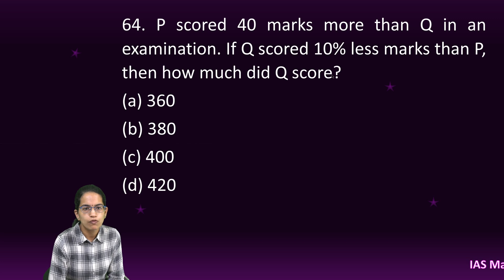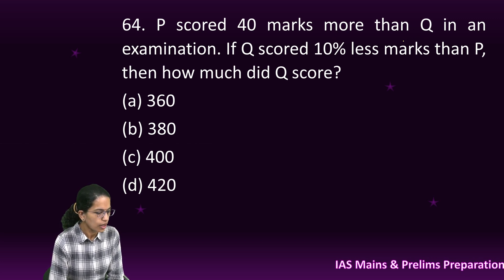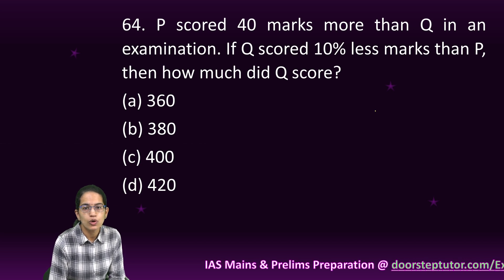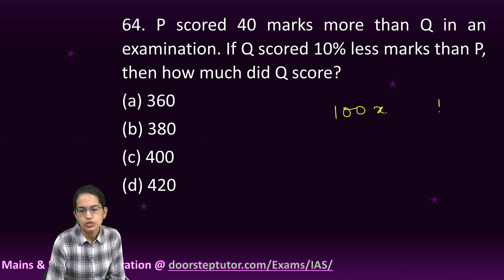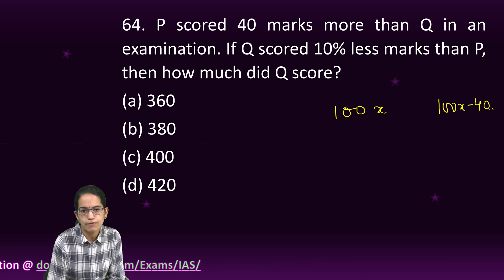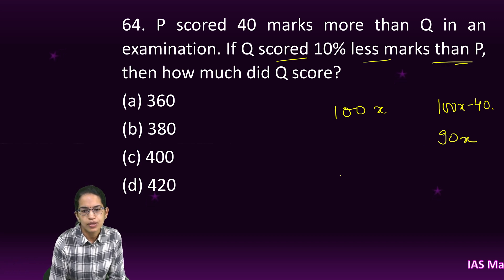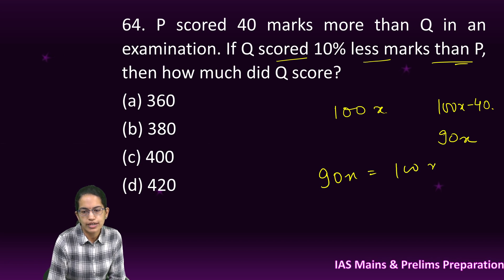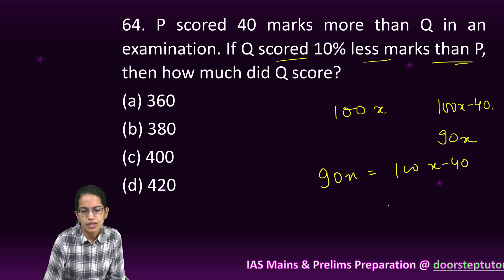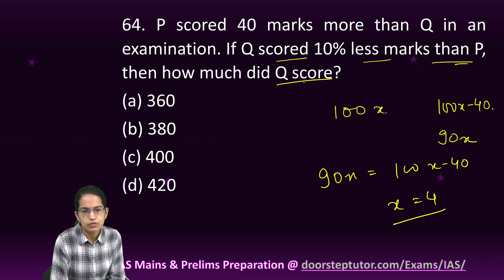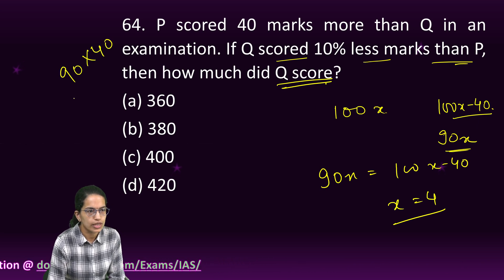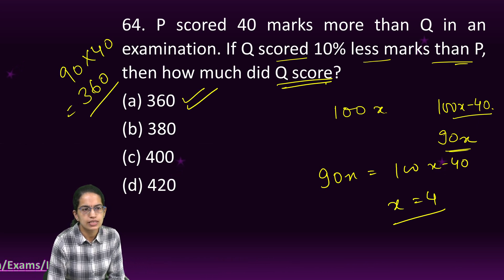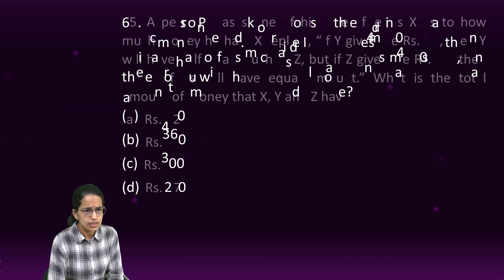The next question: P scored 40 marks more than Q. Let Q's marks be 100x, so P is 100x − 40. In the second case, Q secured 90% less than P, so it becomes 90x. Setting 90x = 100x − 40 gives x = 4. The marks of Q are 90x = 90 × 40 = 360, so 360 is the right option.